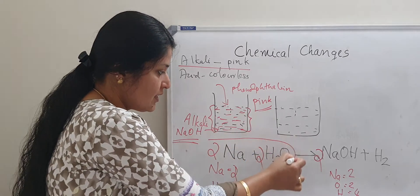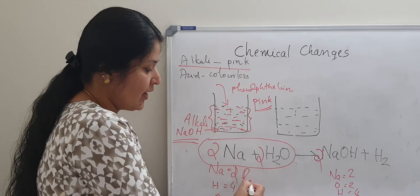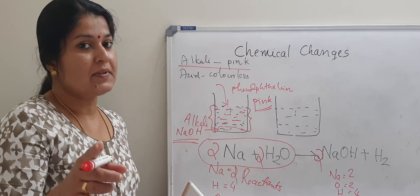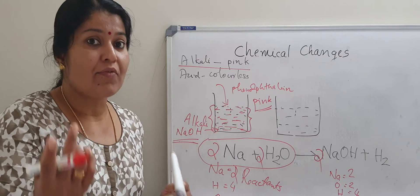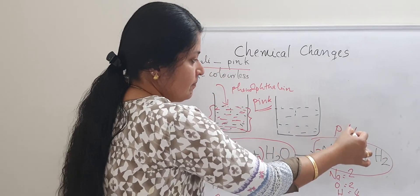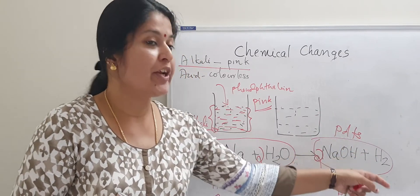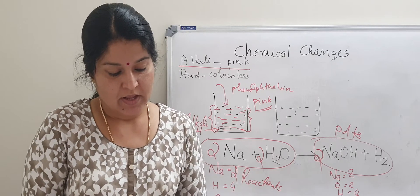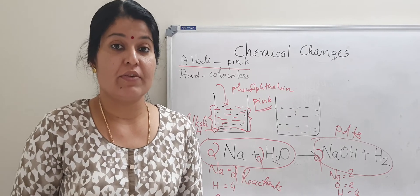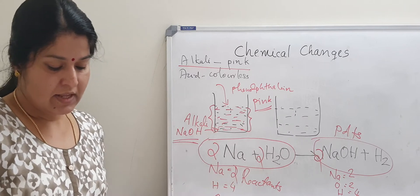Reactants are the substances that take part in a chemical reaction. Products are the substances we get after the chemical reaction. The reactants here are sodium and water; the products are sodium hydroxide and hydrogen. Write down the balanced chemical equation for the reaction.